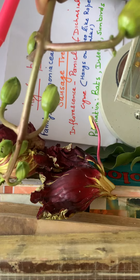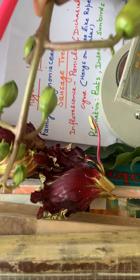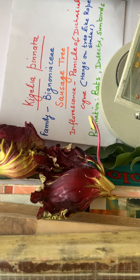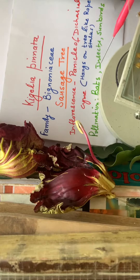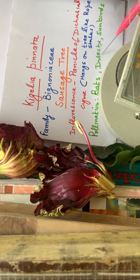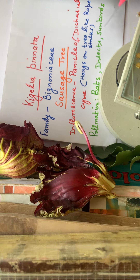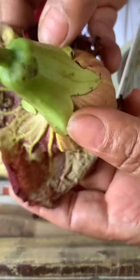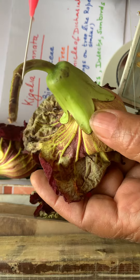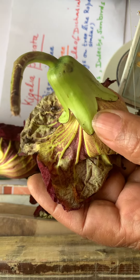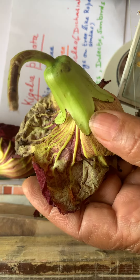Now these are the buds which have not opened up yet. Now if we see the flower, this is quite big in size. Its pollination is by means of bats, insects, and sunbirds. Now if we see the flower, this is attached by means of a stalk, so the flower is pedicillate.